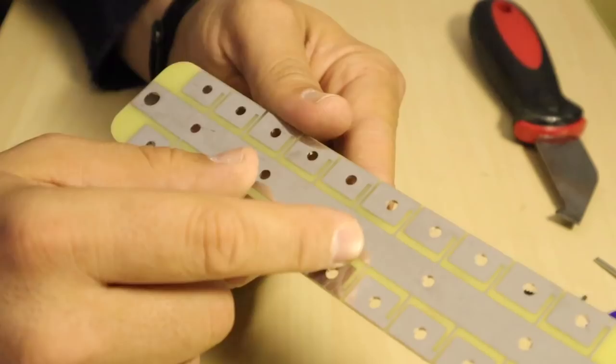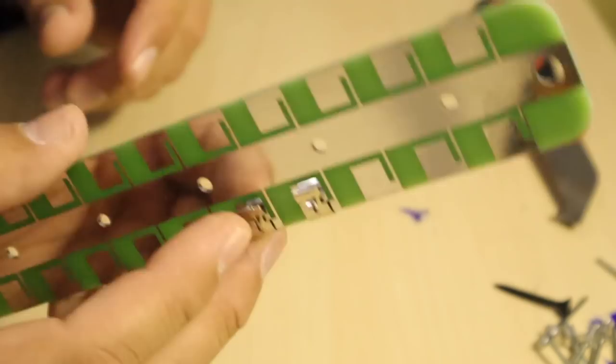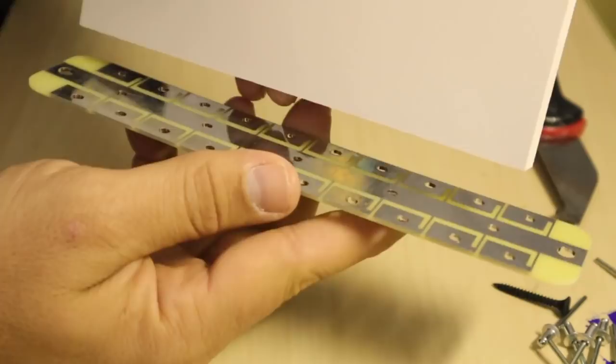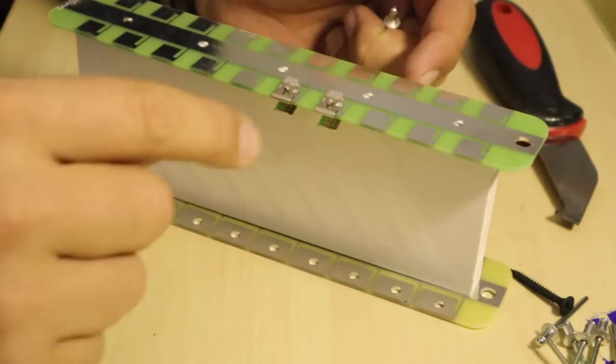After you do that, you go to your negative side which is right here. This one is going to be facing up, so when you put your spacer it's going to be like that, and then when you put your positive it's going to be like that. So both parts are going to be facing up just to make a good contact.